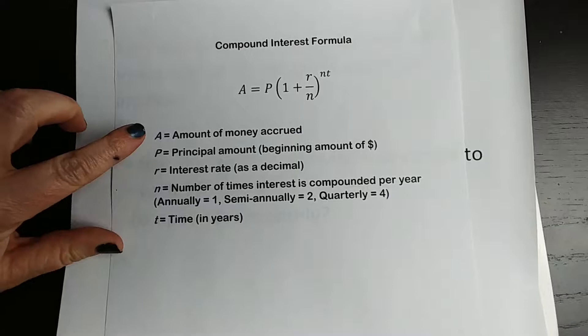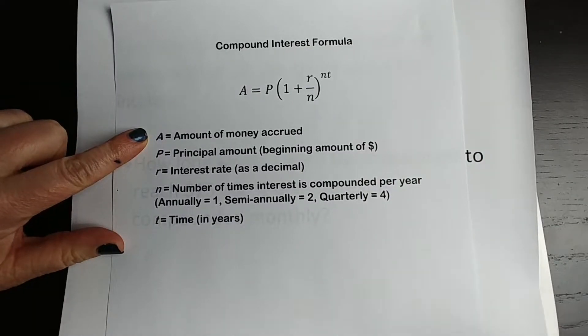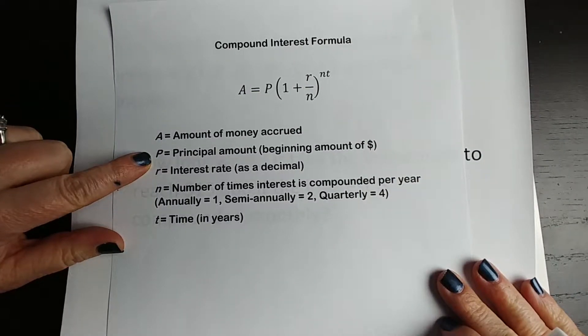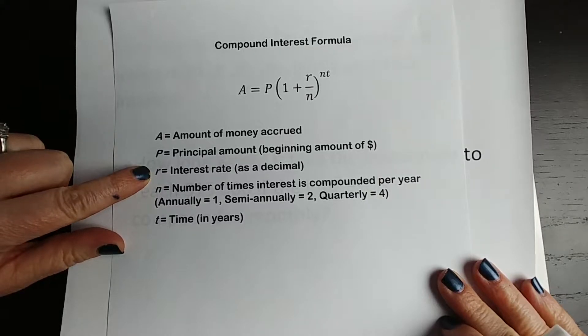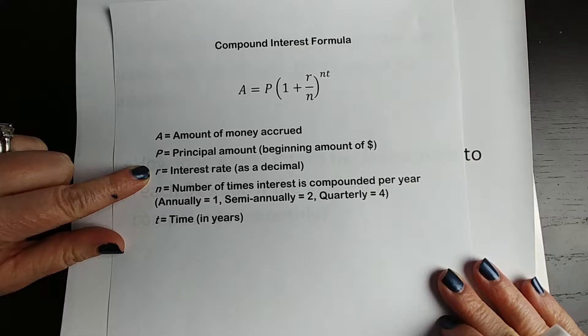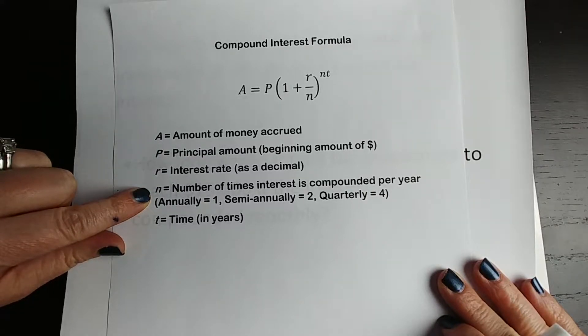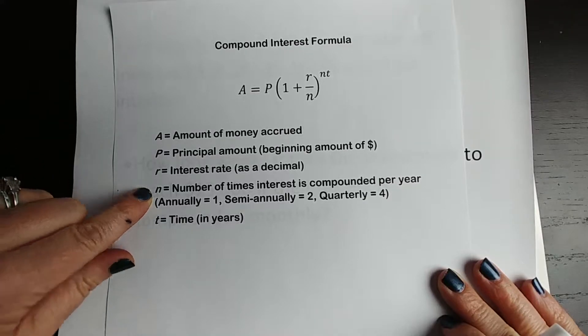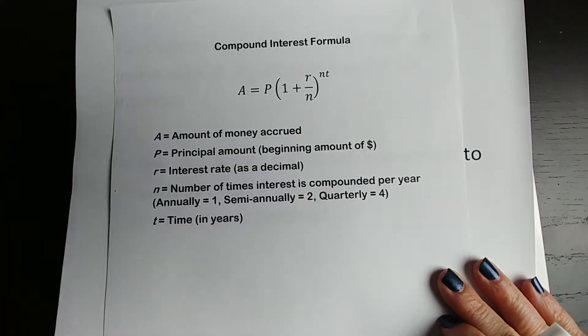Okay, we talked about A being the amount of money that you accrue over time, P is that principal amount, the amount you start with, R is your interest rate, written as a decimal, so we're not going to write 4.5, we're going to write 0.045, because percent means per hundred, so we divide and get our decimal. N is the number of times that that interest is compounded each year, so you don't get one interest payment when it's compounded monthly, you're going to get 12. And T is our time in years.